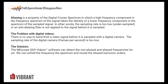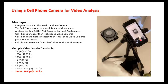It turns out this is easy to fix with the solution the MeScope ODS Videos team put together. The software can detect non-aliased and aliased frequencies very quickly and easily. You can unfold the frequency spectrum and reveal the aliased harmonic orders. These frequencies can then be animated — no changes to phase or amplitude — everything is as it should be, except those frequencies were initially in the wrong place due to an artifact in the way we process data.